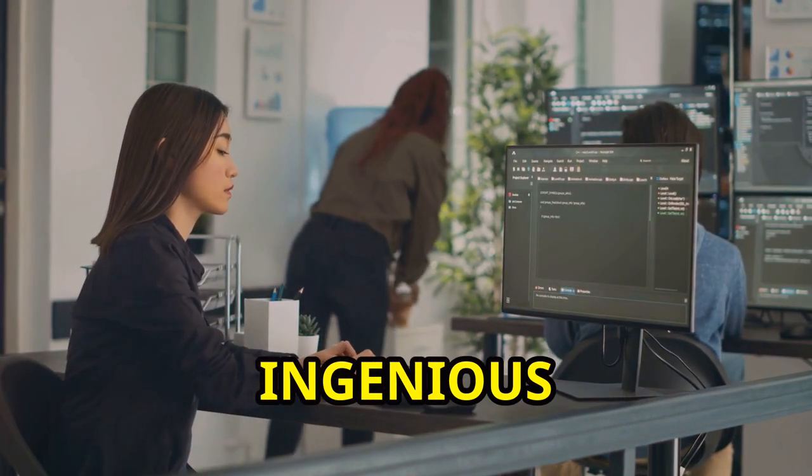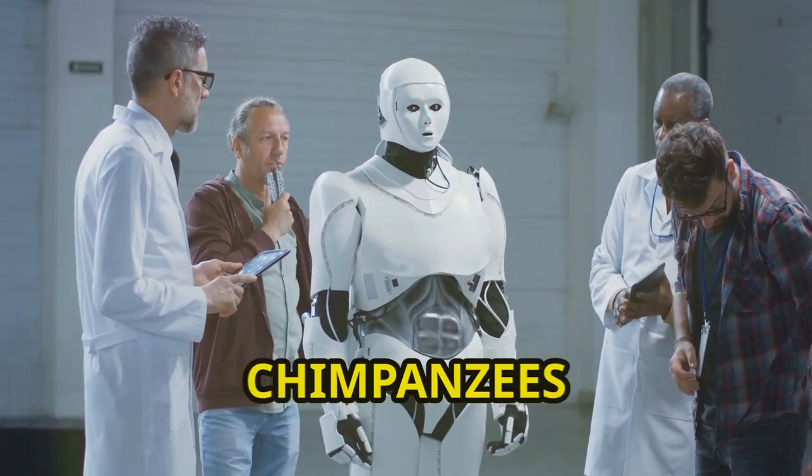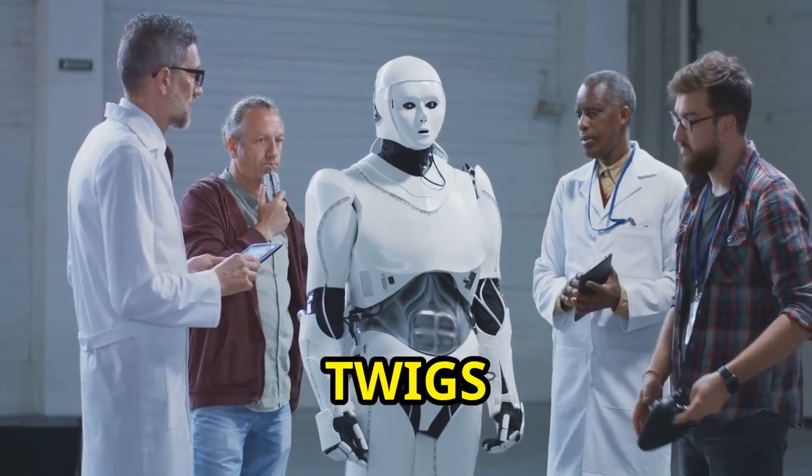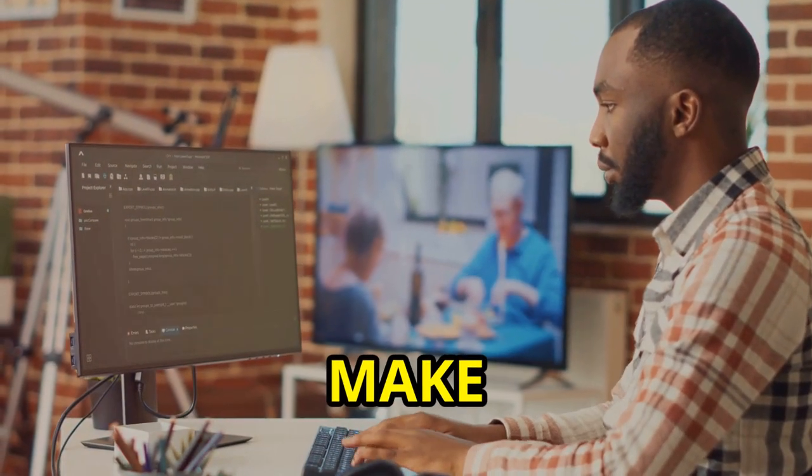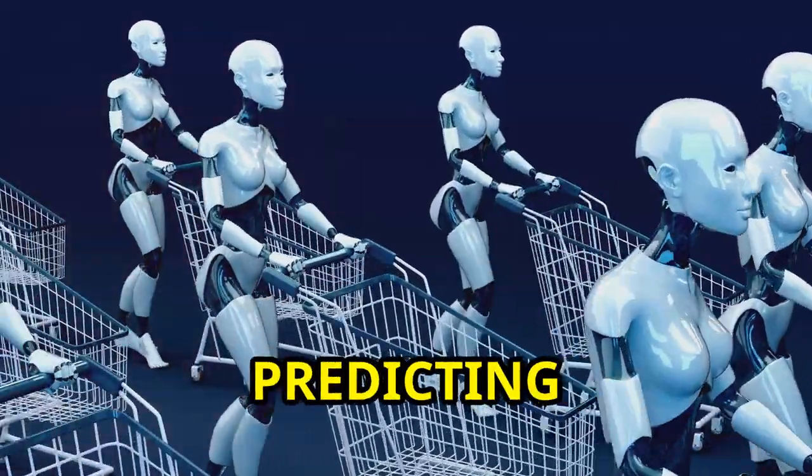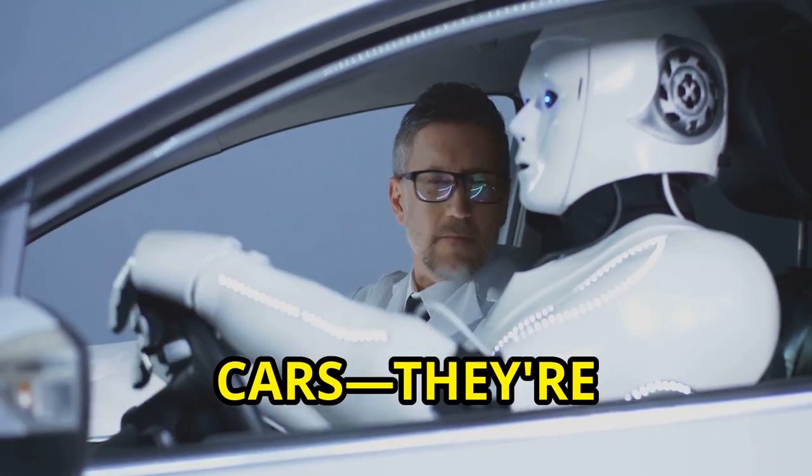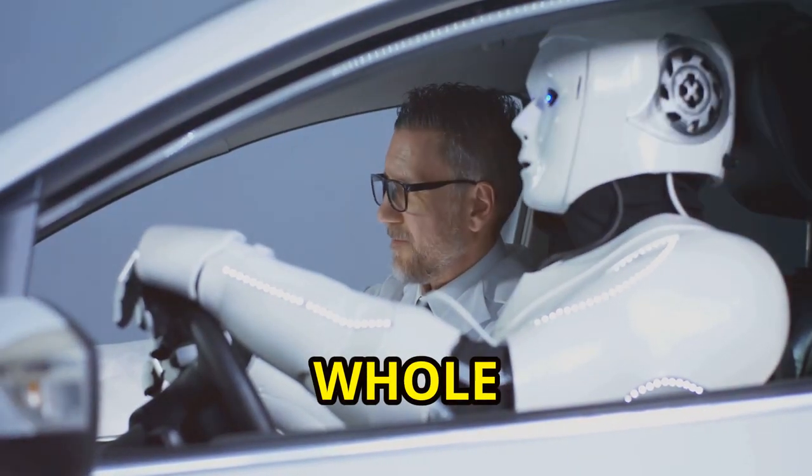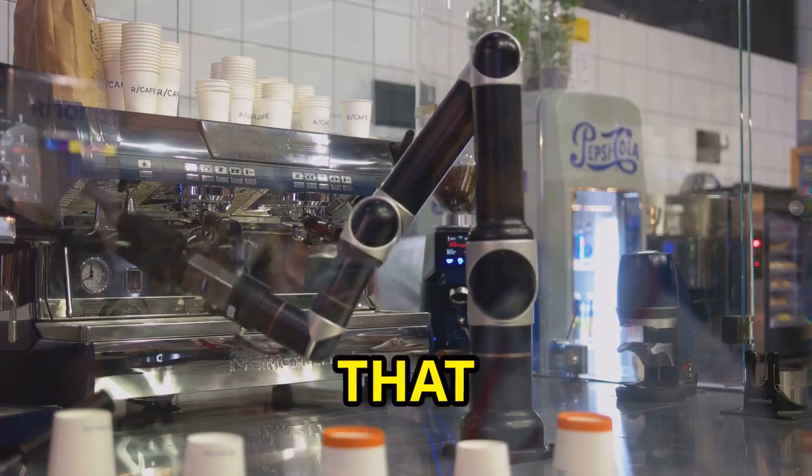We humans, ingenious as ever, have created AI tools like the clever chimpanzees using twigs to fish out termites. We've built these digital tools to make life easier, from predicting what you want to buy online—it's probably socks—to self-driving cars. They're still working on the whole not hitting anything bit.